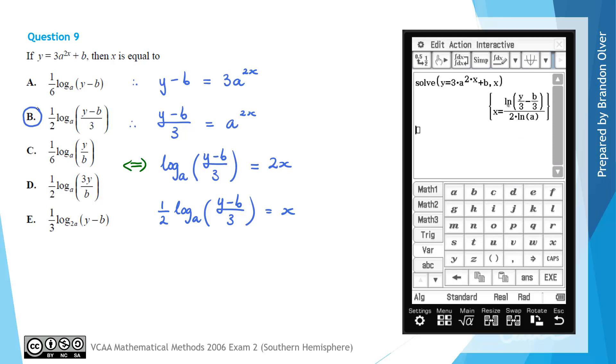And this gives us x equals ln which is log e of y on 3 subtract b on 3 all divided by 2 log e of a, which is obviously different to what we'd seen on the by-hand working that we just did.